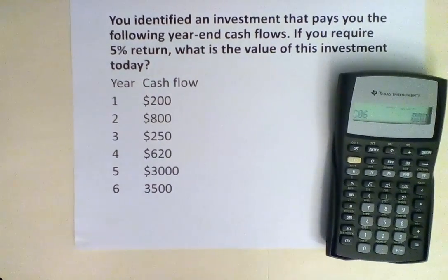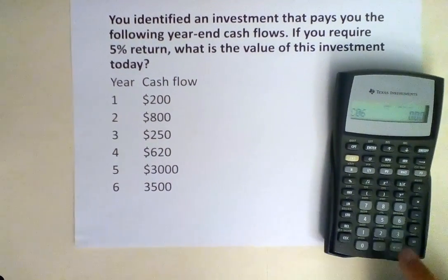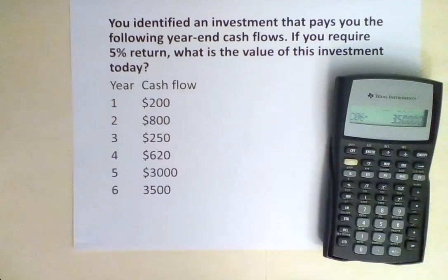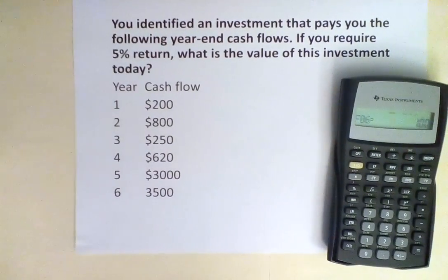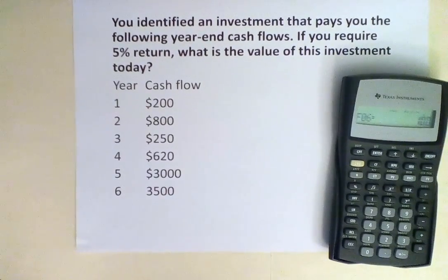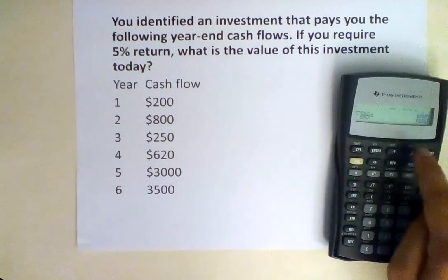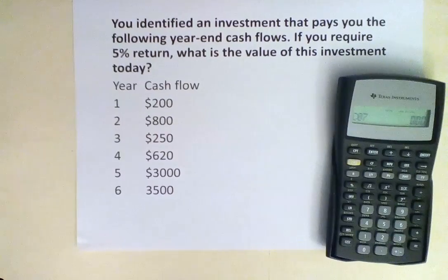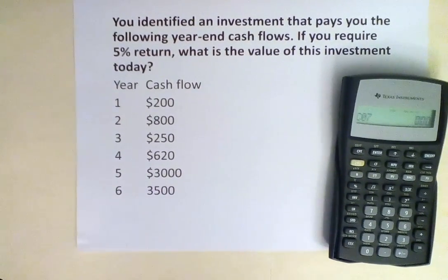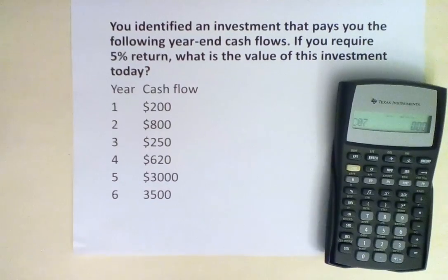C06 is the cash flow at year 6, and it's $3,500, so we input $3,500. Hit enter. Down arrow — we are receiving this payment only one time, so we keep it at 1. We are then taken to C07. We have no cash flow at time 7, so we are done inputting all our cash flows.